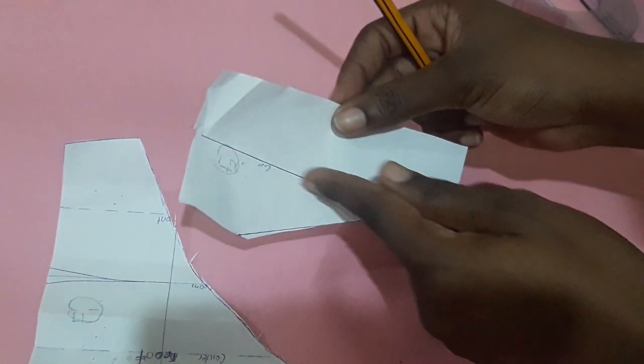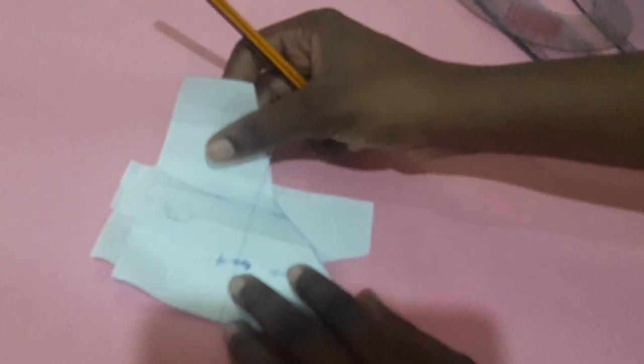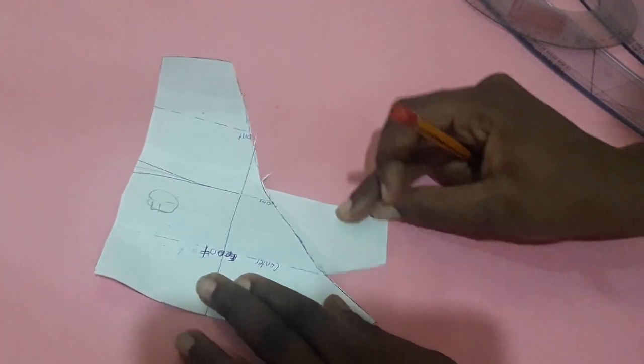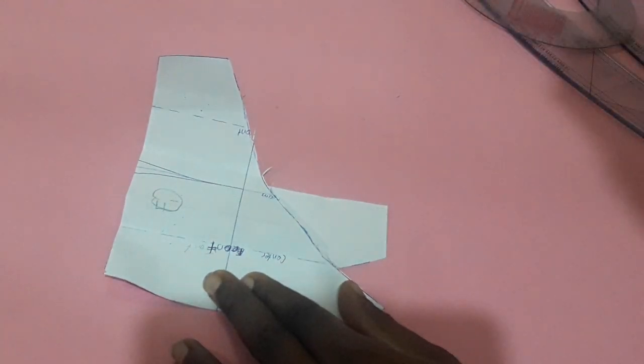So this is one piece and this is the second piece. And they all have their labels. This is the center front, this is the center front. So I'm just going to place this here exactly on the center front.